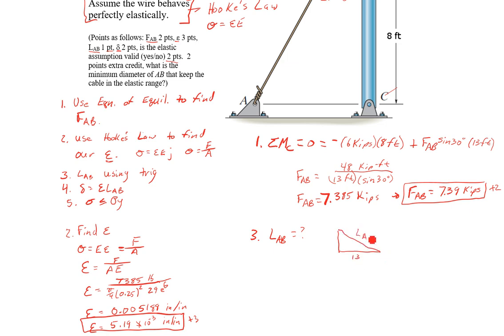This is going to be the cosine of 30 degrees equals 13 over LAB. So LAB equals 13 over cosine 30, and that goes to 15.01 feet. To three significant figures, LAB equals 15.0 feet.